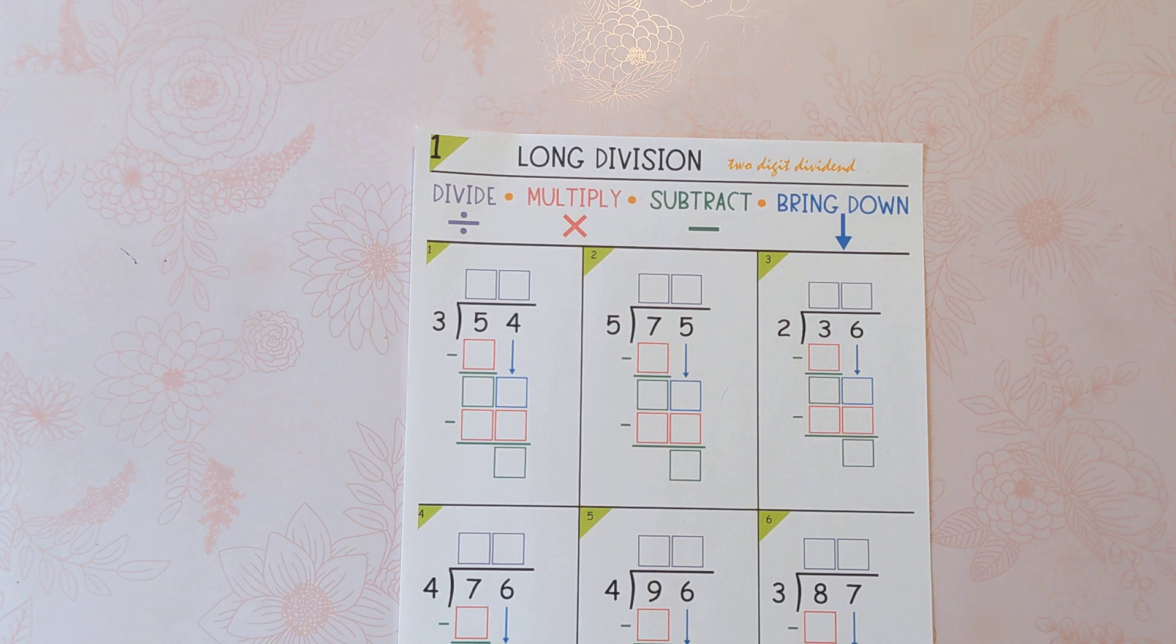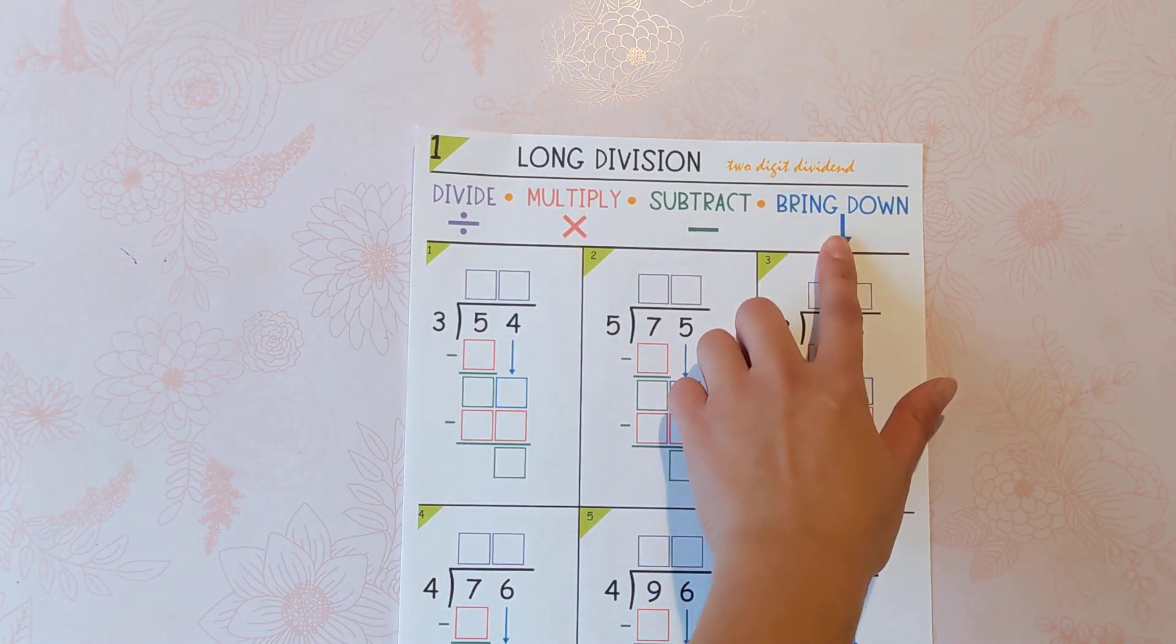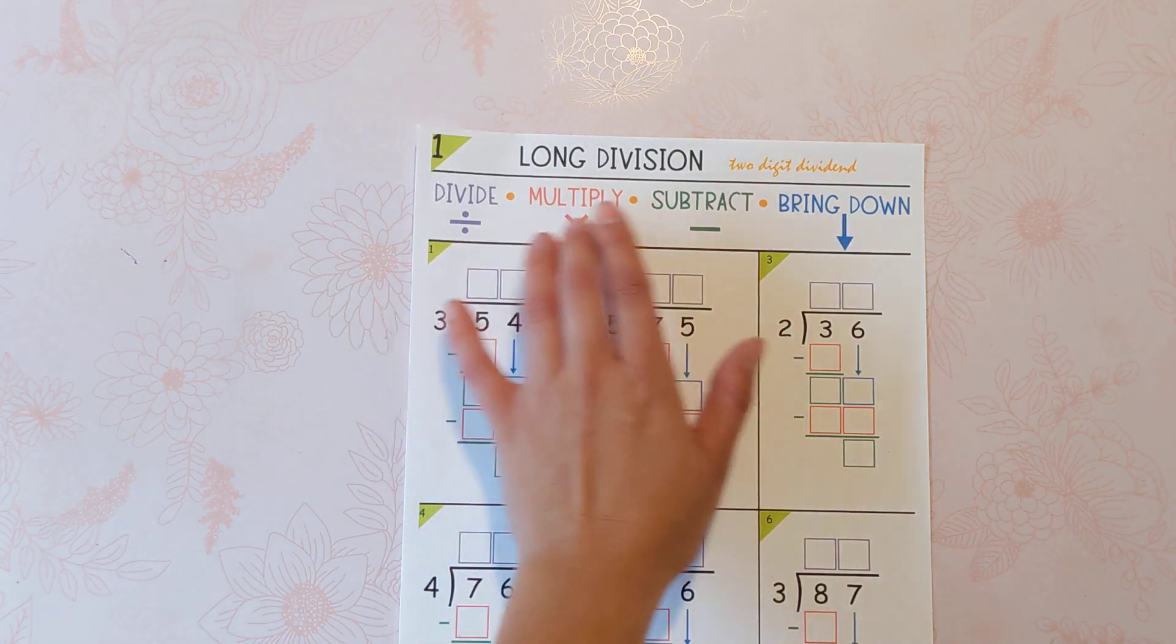So there are four steps that we follow. The steps are divide, multiply, subtract, bring down, and I'm going to show you how to use these steps